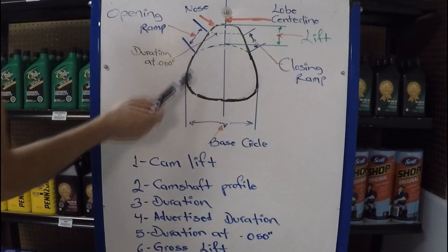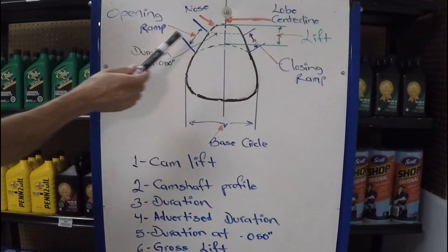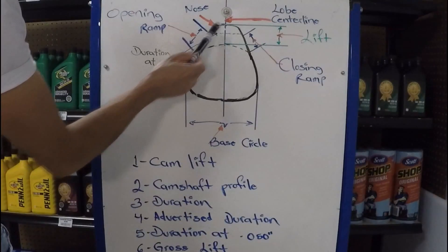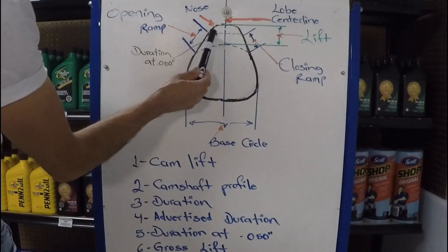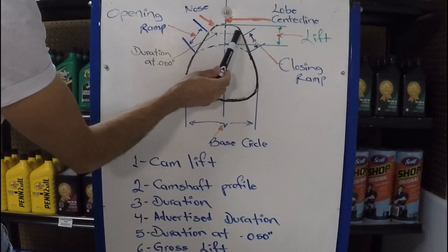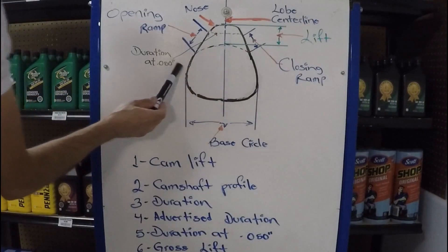Something more useful is going to be duration at 50 thousandths of an inch. The reason why that is more useful is because that way, when you're dealing with camshafts with different profiles, you know, with a more aggressive nose or less, you're going to know how long, how many degrees of rotation the valve is going to stay open at 50 thousandths of an inch.